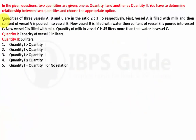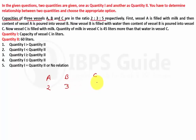Question 2: The capacity of three vessels A, B, and C are in the ratio 2:3:5. So the capacities are 2 units, 3 units, and 5 units respectively.